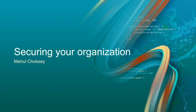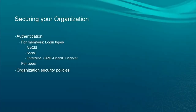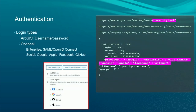Now we'll talk about securing your organization. There are three broad categories of login types supported. One is ArcGIS logins, where you provide a username and password. The second category is enterprise logins, which covers SAML and OpenID Connect. And then social logins — Google, Apple, Facebook, and GitHub. We'll go through each of those in detail on what you can configure and how.